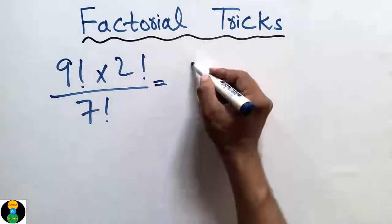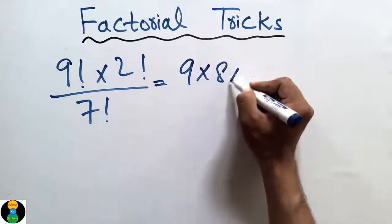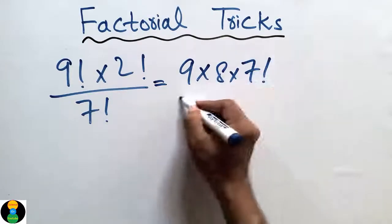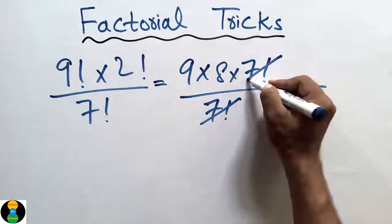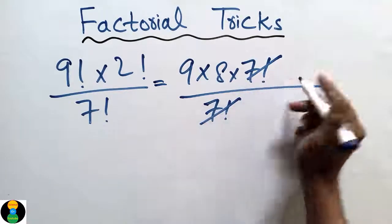Just expand the 9 factorial up to the 7 factorial because we know that the denominator, the 7 factorial, will be cancelled with this 7 factorial. So no need to expand this, and the 2 factorial can be expanded.